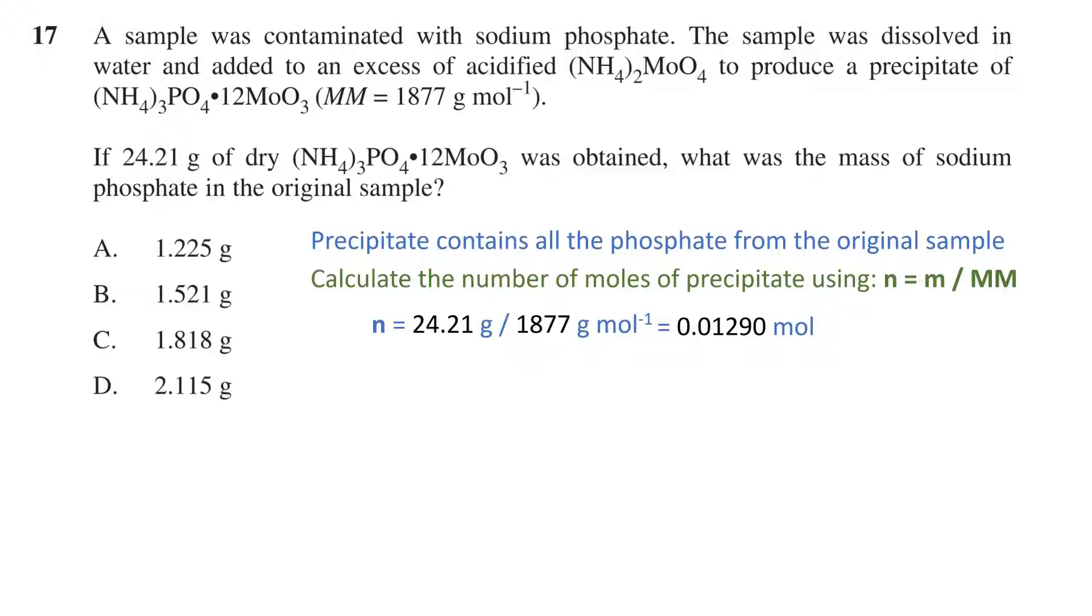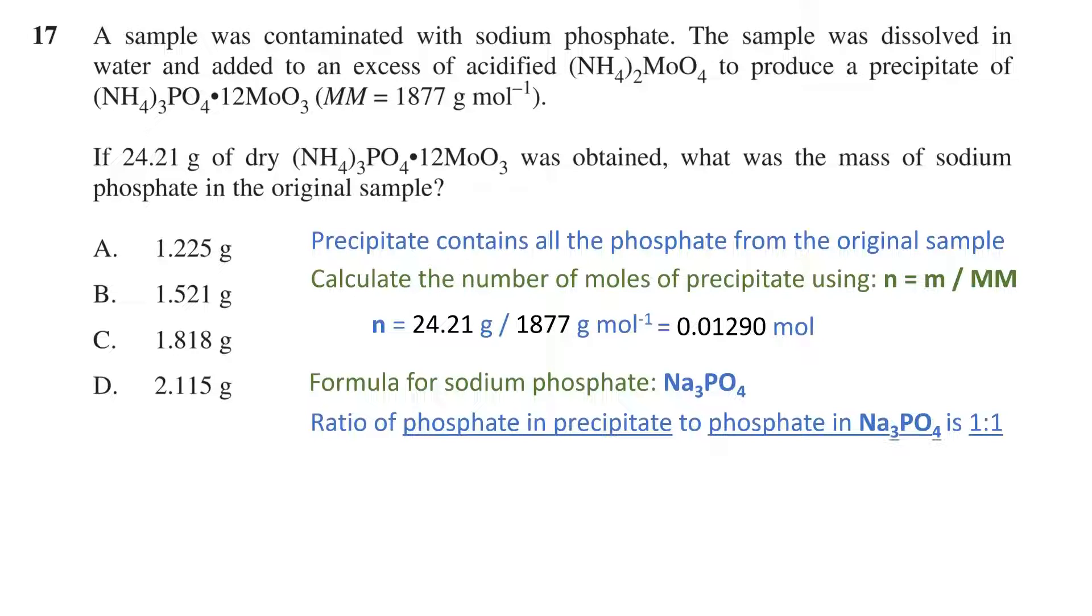Now, the chemical formula for sodium phosphate is Na3PO4, as the phosphate ion has a charge of negative 3, while the sodium has a charge of plus 1. Comparing this formula with that of the precipitate, the ratio of phosphate in the precipitate to phosphate in the sodium phosphate is 1 to 1. Therefore, the number of moles of sodium phosphate is also equal to 0.01290 moles.